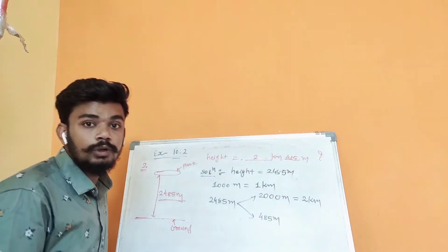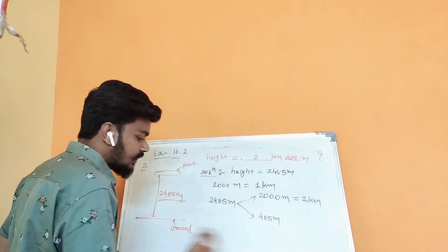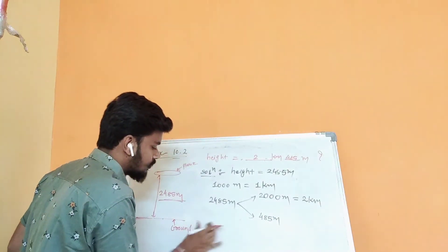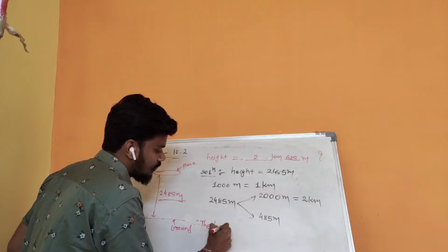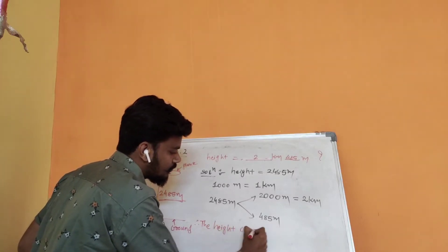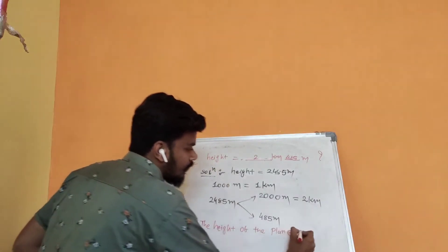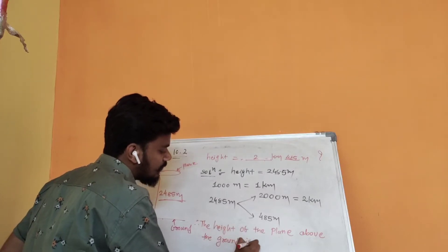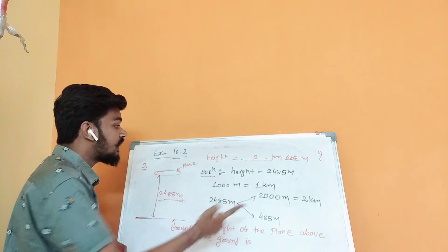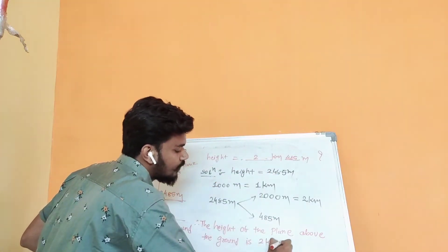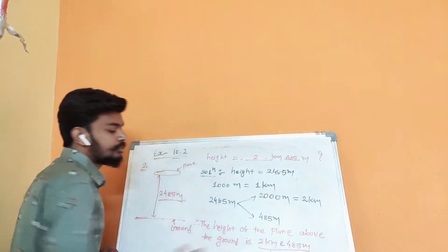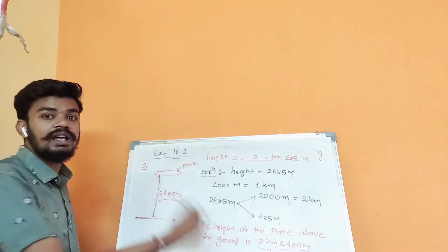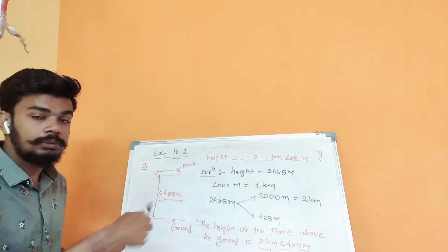Since this is a word problem, at the end we have to write the answer in sentence form. So we write: 'The height of the plane above the ground is 2 kilometers and 485 meters.' That is how we write the final answer for a word problem — always in sentence form at the last step.